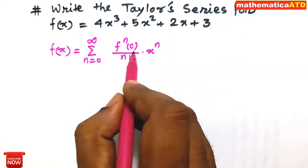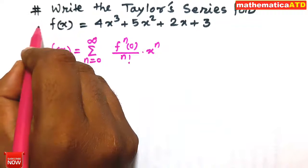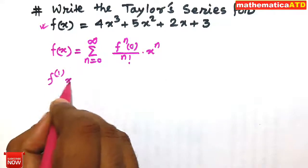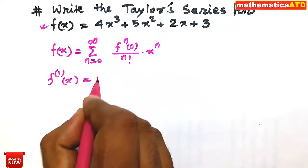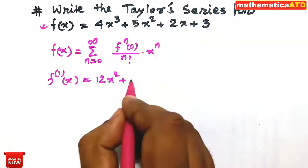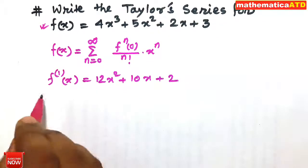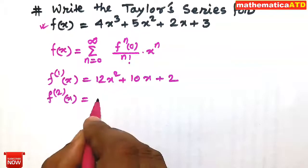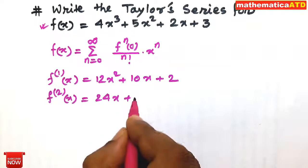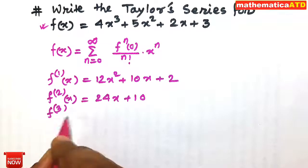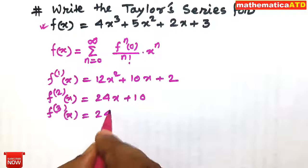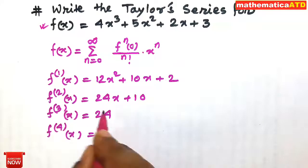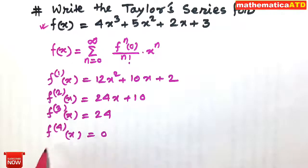First, we shall find the derivative values. From f(x), the first derivative f'(x) = 12x² + 10x + 2. The second derivative f''(x) = 24x + 10. The third derivative f'''(x) = 24. The fourth derivative f''''(x) = 0, because this is constant, and so on.